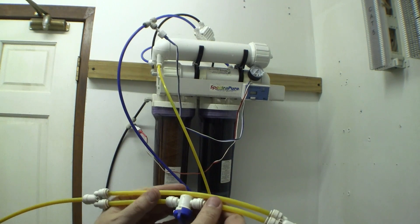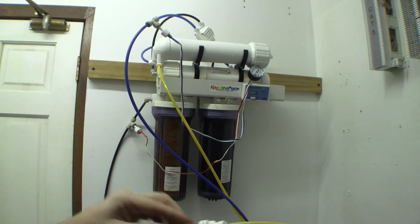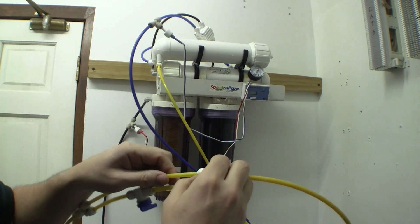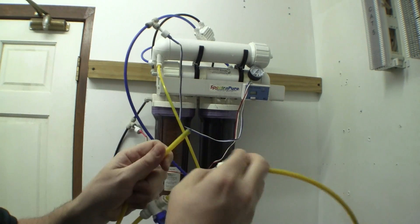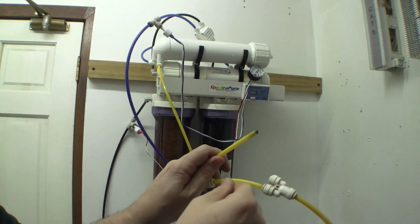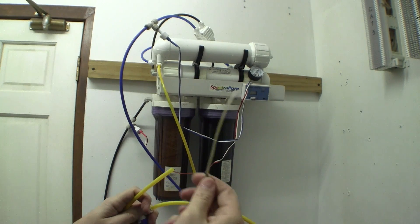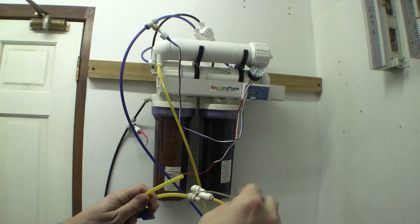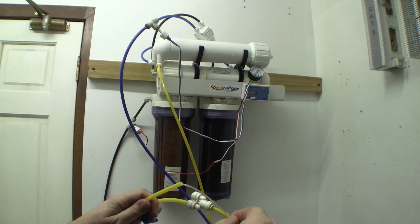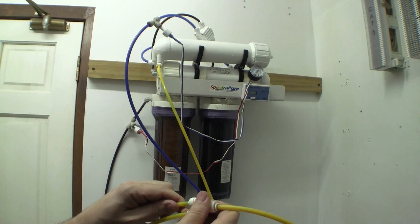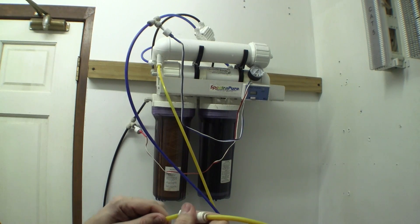You close it off and then water is going to be restricted so that the flow rate is controlled going through the unit. What controls the flow rate is inside this side of the flush valve kit is a flow restrictor, this little capillary tube. This defines how much water is wasted versus how much water is made by the RO system.